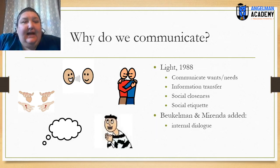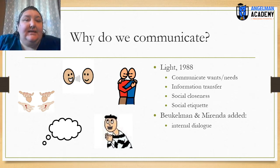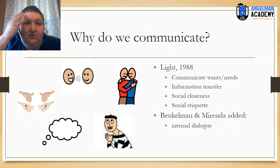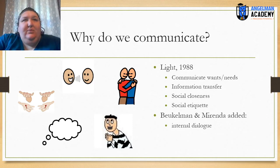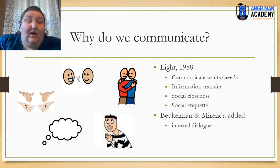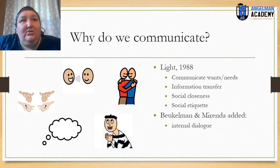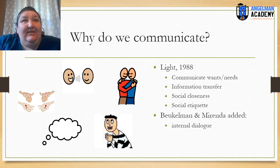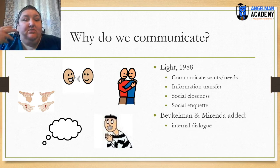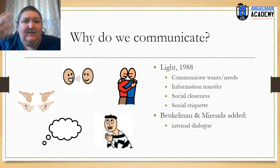The final function — added after the original research by Beukelman and Miranda, along with Janice Light who did the original research — is internal dialogue. That's the conversations we use language for inside our own heads. It's when we get up in the morning and think, 'Oh, it's Monday, I don't want to be awake — I'm going to hit snooze,' then saying, 'If I want coffee before I leave, I have to get up.' What we've found is that people who don't have access to language from an early age don't necessarily have these internal dialogues. So they have to learn language to have conversations in their own head — to regulate themselves, to keep understanding what's happening around them. This internal dialogue is a big piece of why we have language.